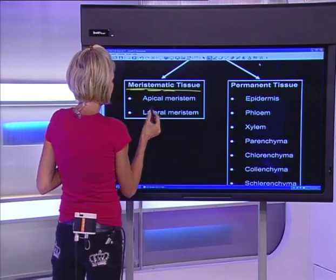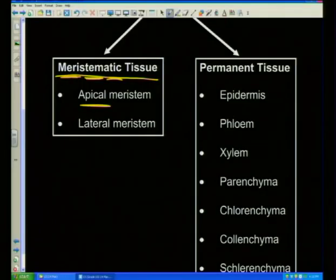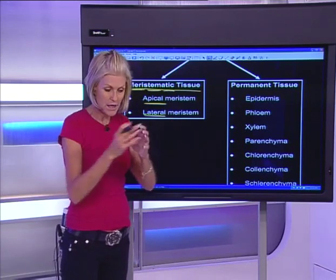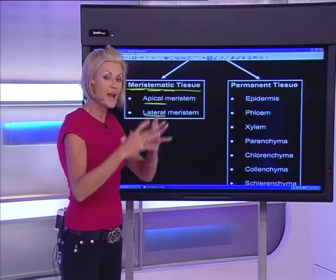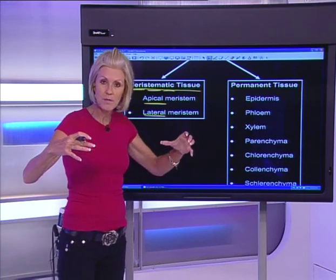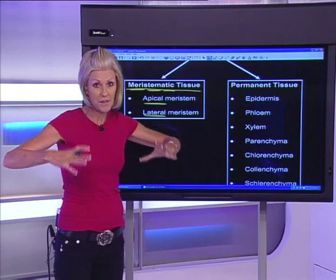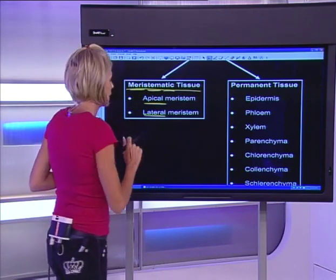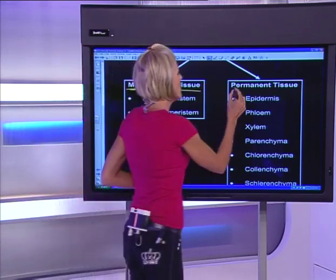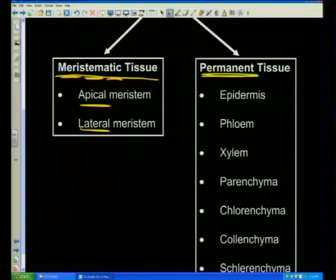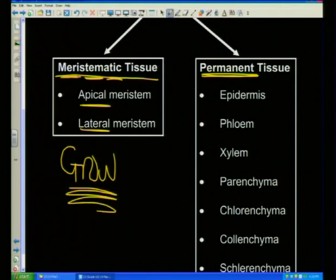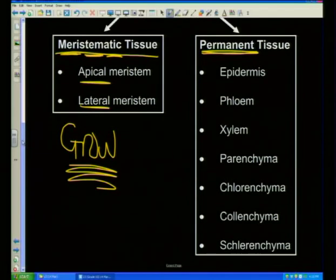We've got the apical meristem, which is at the tip of the stems, and the lateral meristem, which causes a woody tree to grow bigger in its girth — lateral means sideways — so lateral meristem gives secondary thickening, which you'll cover in grade 11. Now permanent tissue — meristematic tissue is the growing tissue, and permanent tissue is the tissue that helps the plant to survive.